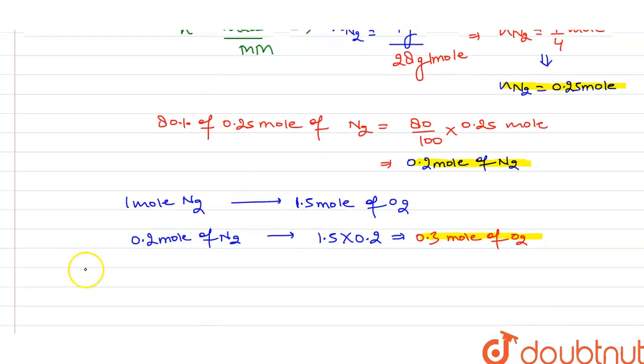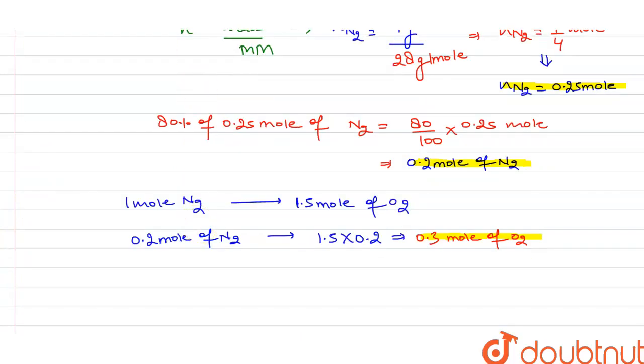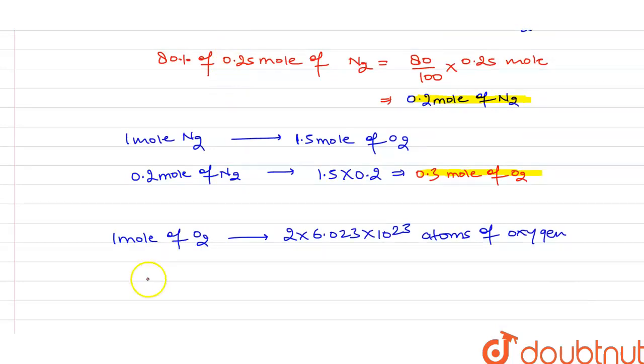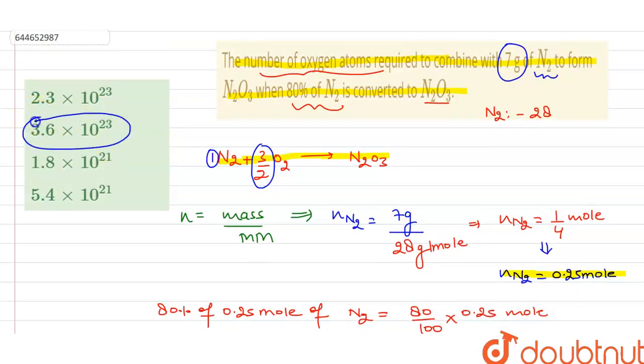The question asks about the number of oxygen atoms required. We know that one mole of oxygen molecules has 2 multiply 6.023 multiply 10 to the power 23 atoms of oxygen. Using unitary method, 0.3 mole of oxygen will contain 2 multiply 6.023 multiply 10 to the power 23 multiply 0.3 atoms, which equals 3.6 multiply 10 to the power 23 atoms of oxygen, matching our second option.